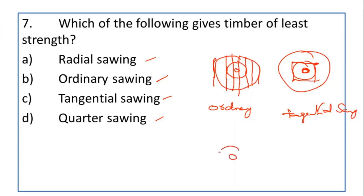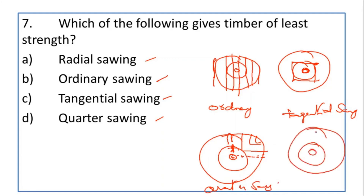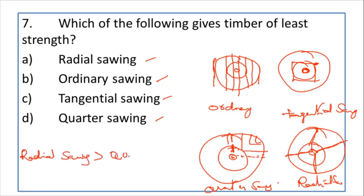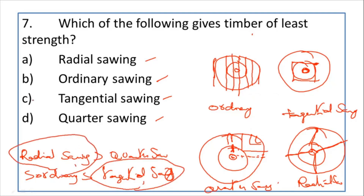In quarter sawing, a quarter of the timber cross section is cut and cuts are made within that quarter portion. In radial sawing, cuts are made parallel to the medullary rays. The order of strength from highest to lowest is: radial > quarter > ordinary > tangential. So tangential sawing gives the least strength and radial sawing gives the highest strength.